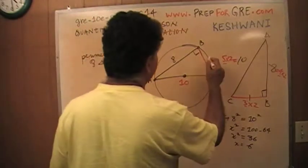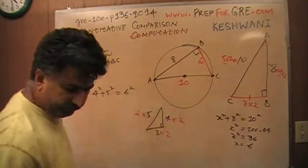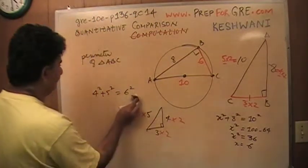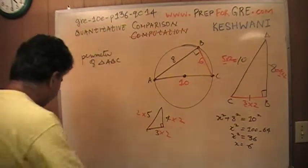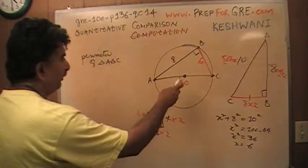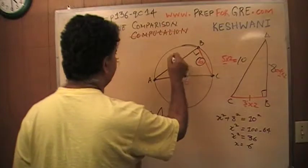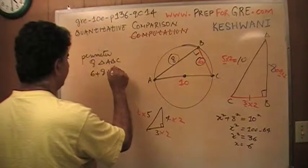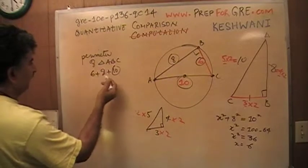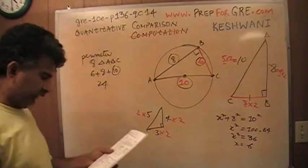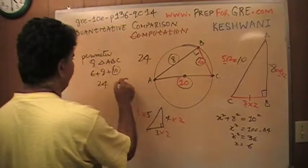So the missing side is 6. The perimeter of this triangle is 6 plus 8 plus 10, which is 24. What do we have in the second column? Also 24. In the other column they also give you 24, so the answer is C.